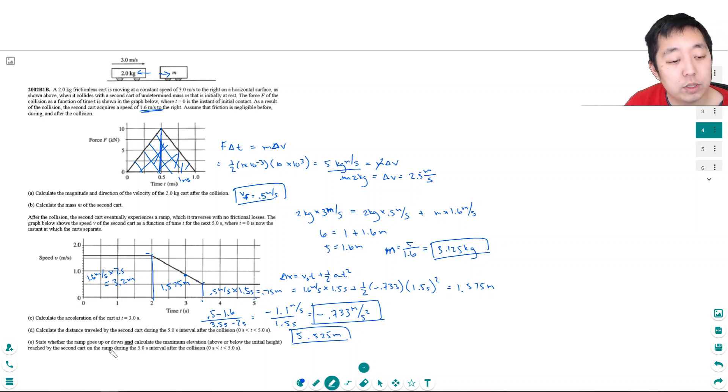State whether the ramp goes up or down and calculate the maximum elevation reached by the second cart on the ramp during the five second interval. Does it go up or down? Well, the cart's moving to the right at 1.6 meters per second, and then it slows down. That means it has to have been going up. That's the only way it would slow down.